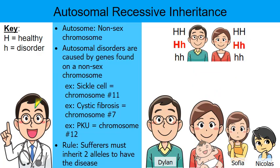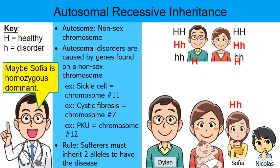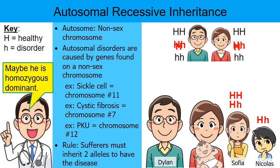What about their other children? Maybe Sophia is heterozygous — maybe she inherited a dominant allele from one parent and a recessive allele from the other. Or maybe Sophia is homozygous dominant. We just don't know. All we know is that she's healthy and does not have the disorder. Same with Nicholas — we know he's healthy, but he could be heterozygous or homozygous dominant. We just know that Sophia and Nicholas are healthy.